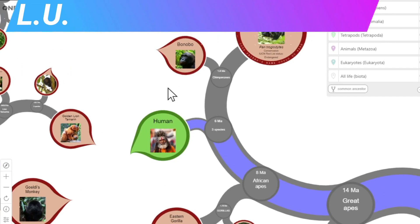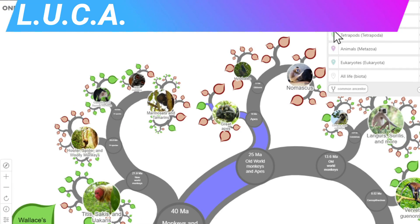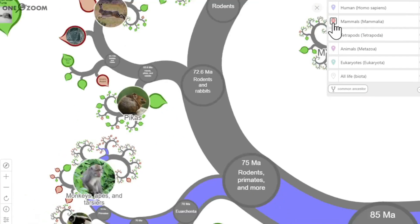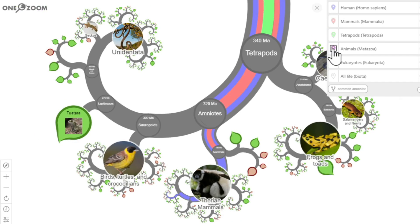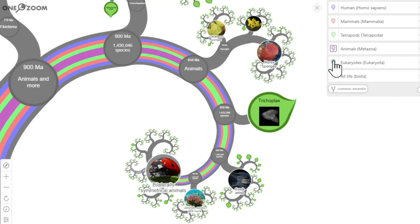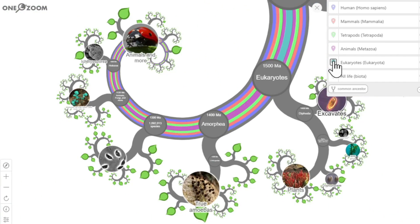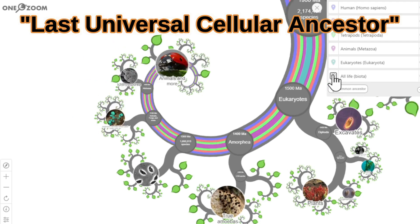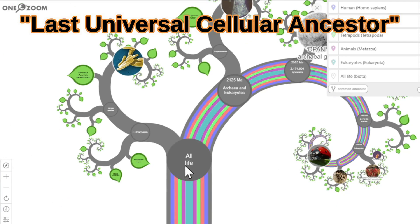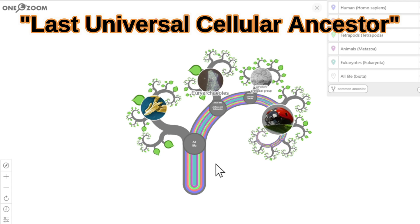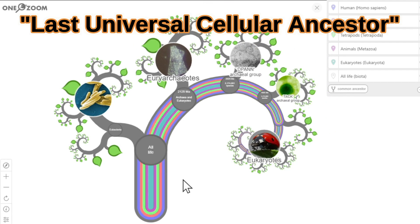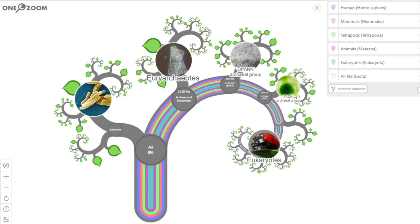LUCA: if you trace the tree of life all the way back to the beginning, every living thing on Earth relates to one common ancestor called LUCA. The Last Universal Cellular Ancestor is the first form of life on Earth and the point where evolution begins. But how did this first living cell come to be?